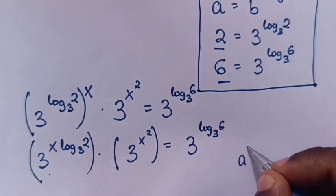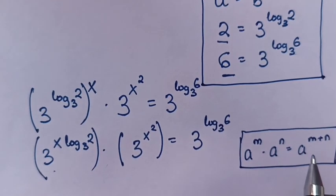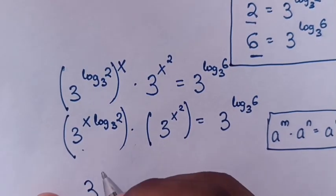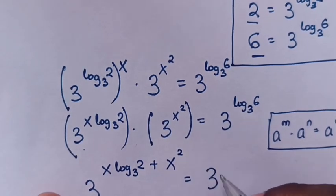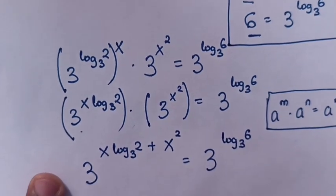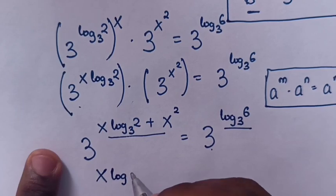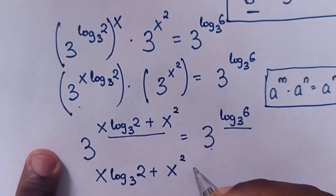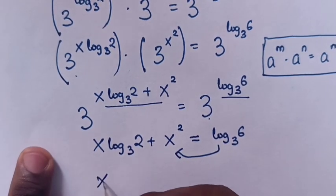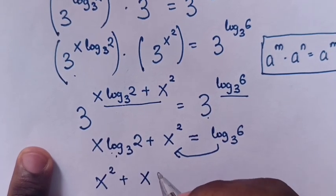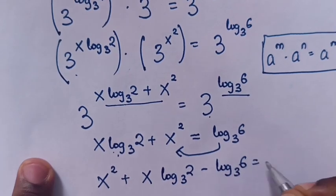Here we will apply the exponential rule that a power m times a power n is equals to a power m plus n. So here in our equation, it will be 3 power of x log of 2 base 3 plus x squared is equals to 3 power of log 6 base 3. So it will be x log of 2 base 3 plus x squared is equals to log of 6 base 3.